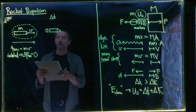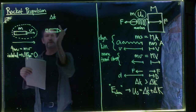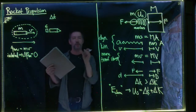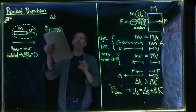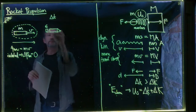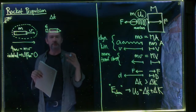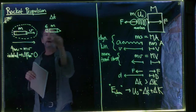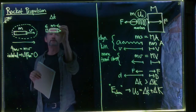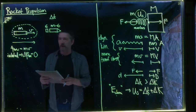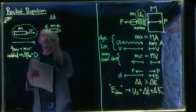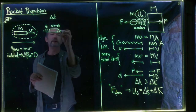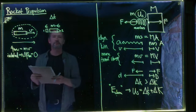We suppose the chunk of exhaust gas particles has mass epsilon — a small quantity, perhaps one gram compared to thousands of kilograms in the rest of the rocket. The rocket's mass decreases by epsilon: if it was M before, it's now M minus epsilon. We call the exhaust gas particles subsystem one and the rest of the rocket subsystem two.